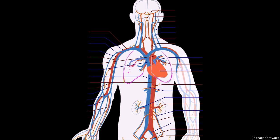Now we have oxygenated blood — it's red — and that gets pumped out to the rest of the body. This is the interesting thing when we're talking about pulmonary arteries and veins. The pulmonary artery is blue — going away from the heart, it carries deoxygenated blood — but it's still an artery. Then as we go towards the heart from the lungs, we have a vein, but it's oxygenated.